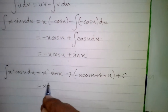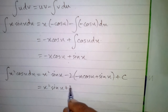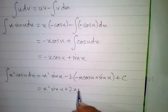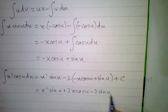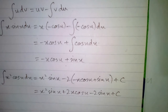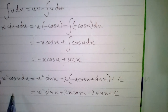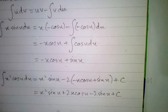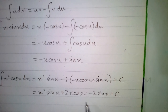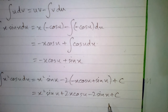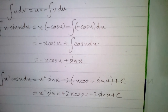Expanding and simplifying, we get x squared sin x plus 2x cos x minus 2 sin x plus C. Therefore, the integral of x squared cos x with respect to x is x squared sin x plus 2x cos x minus 2 sin x plus C, where C is the constant of integration.